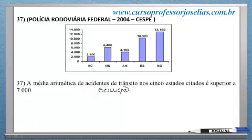Nós temos a quantidade de acidentes por cada estado. Por exemplo: Acre, 2.100; Mato Grosso do Sul, 6.400; Amazonas, 4.100; Espírito Santo, 10.300; Minas Gerais, 13.100. Eu quero saber a média aritmética — vou chamar essa média aritmética de x barra.